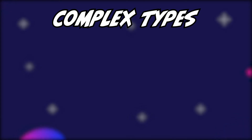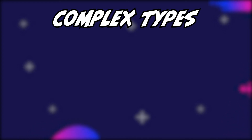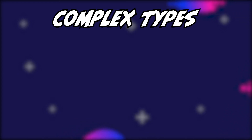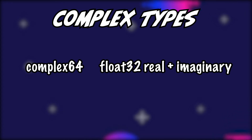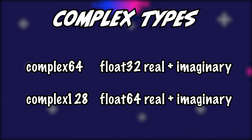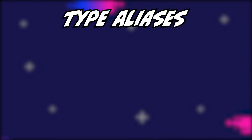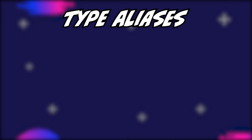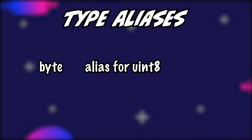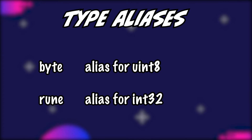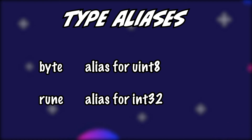The last type of numeric variable types are the complex numbers. For some of you, complex numbers may be familiar from your studies, but if you write code that solves business problems, you basically never come across them. So the only thing I'll explain is that complex64 types have a float32 real and imaginary part, whereas complex128 types have a float64 real and imaginary part. Numeric values also have two aliases built into the language: byte as an alias for uint8, and rune as an alias for int32. This will become clearer once we talk about text types.